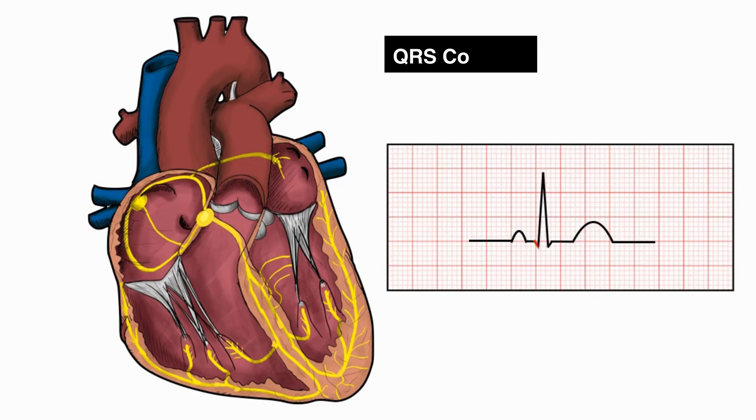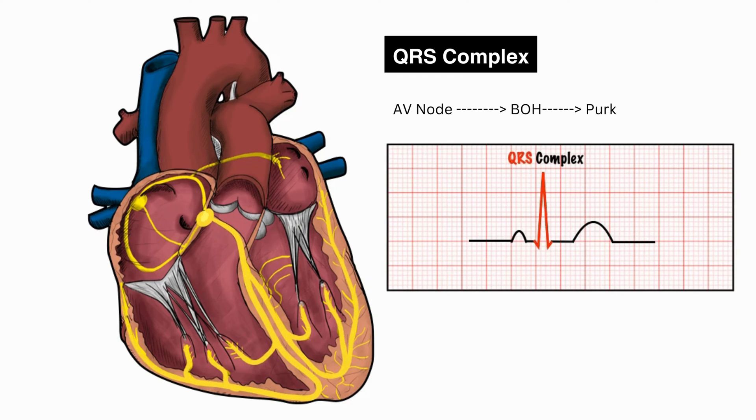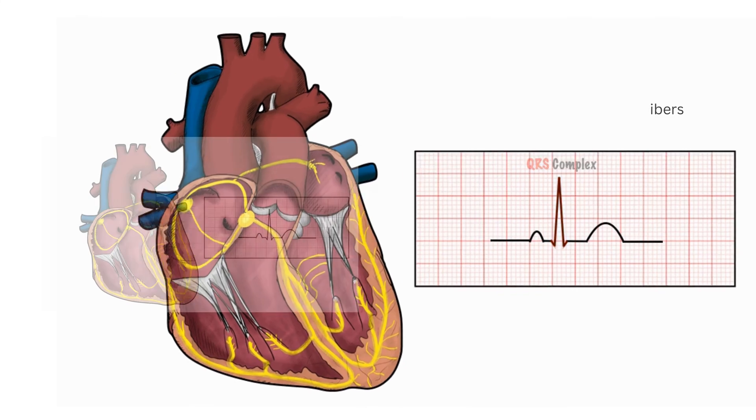Similarly, the QRS complex represents the time it takes for the impulse to travel from the AV node through the bundle of His and Purkinje fibers to the ventricles. Changes in the duration of the QRS complex can also indicate abnormalities in conduction speed.